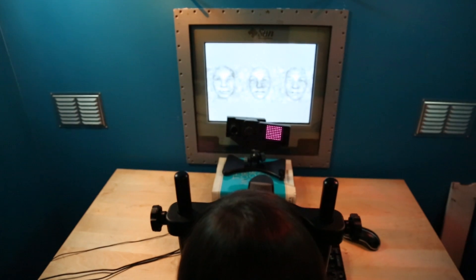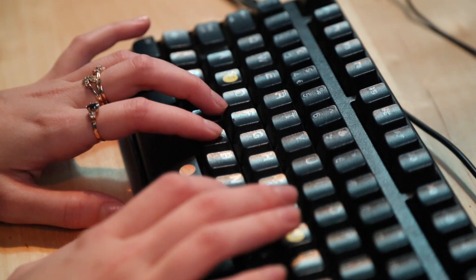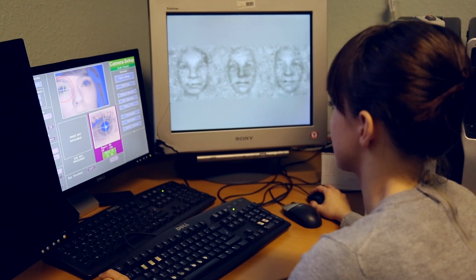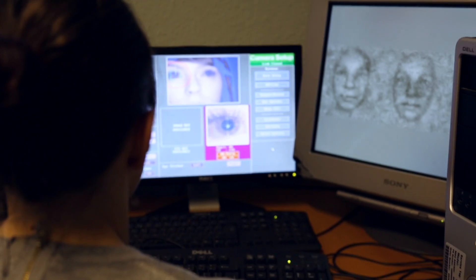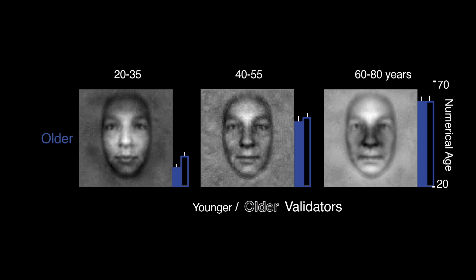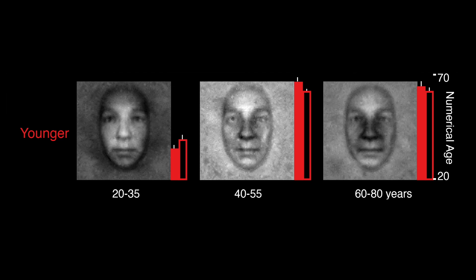To test whether these mental representations convincingly portrayed the intended age groups to other people, we needed to perform a second experiment. We took two new groups of naive people and asked them to give a precise estimate of the age of the resulting images of faces. Mental representations in all three age categories of older people were perceived to be their expected ages. However, mental representations from the young participant group were perceived differently. The representations of middle age from young participants could not be discriminated from the representations of old age.